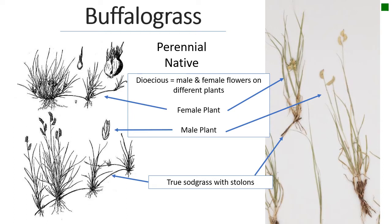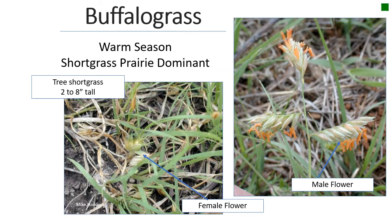It forms a nice sod because of those stolons, and throughout much of the plains it's used as a lawn grass because it has low leaves, hardly ever needs to be mowed, and stays green as long as there's moisture — it's a great low-maintenance lawn grass. In pictures, the female flowers are tucked down in the leaves, and the leaves can be quite hairy. It's low growing — two to eight inches tall — and the male flowers show orange anthers, though you'd mostly recognize it as combs of seeds on the seed head.